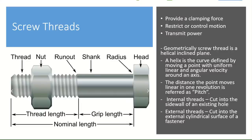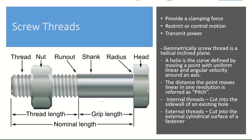Next, take a look at screw threads. Depending on what type of head the screw or fastener has, the nominal length can be decided. The thread is obviously a part of the fastener, and if you are using a nut then we can call that a bolt. You can also look at other notations: what is a shank, where is the run-out, what is the threaded length versus the grip length, which is the unthreaded portion. The objective of a screw thread is to provide a clamping force between components being assembled, restrict motion, and transmit power from one component to another.